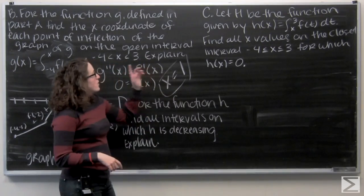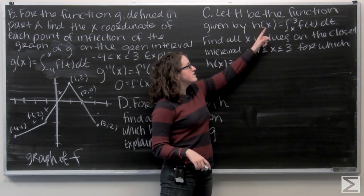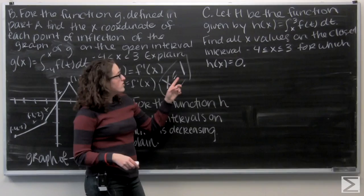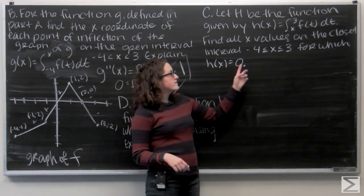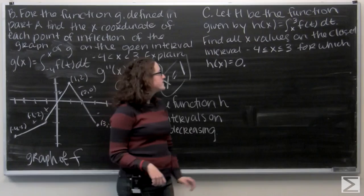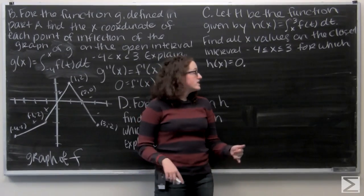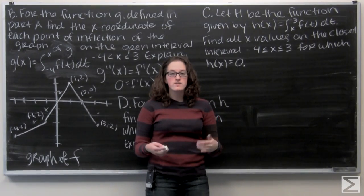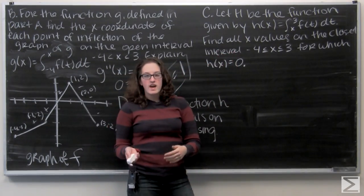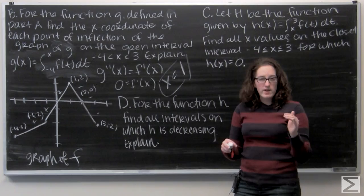Now let's move on to part c. We're introducing a new function h, defined as the integral from x to three of f of t. Part c asks us to find all x values on the closed interval negative four to three for which h of x equals zero. I can't take the integral of f of t directly since I'm not given an equation, but I can use the idea that a definite integral equals the area under the curve. For this integral to be zero, I need equal area above and below the x-axis.